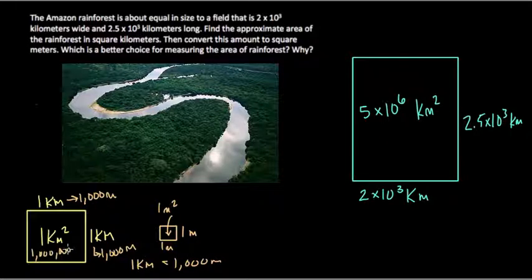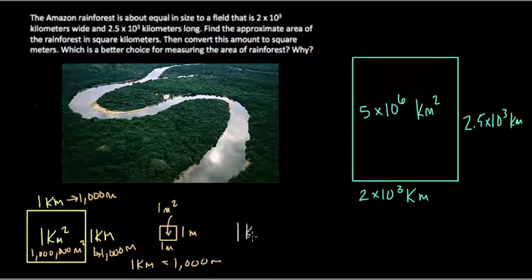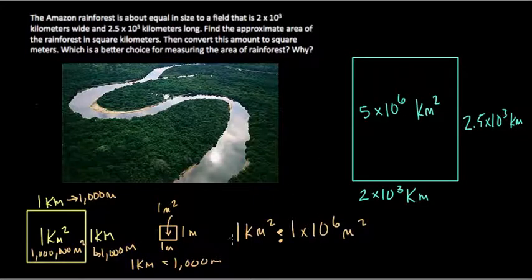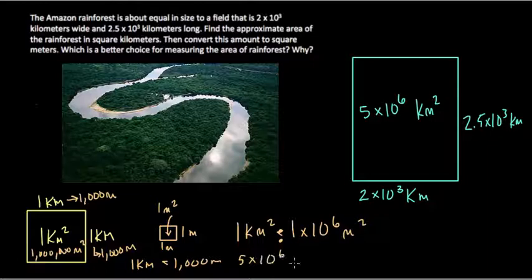1,000 times 1,000 is a million meter squares fit inside a 1 kilometer square. So we have this new ratio, that 1 kilometer square equals 1 times 10 to the 6th meters squared. That's a million square meters. So here, we don't have a 1 kilometer square. We have 5 times 10 to the 6th square kilometers. We want to know, what's x? How many meters squares do we have?